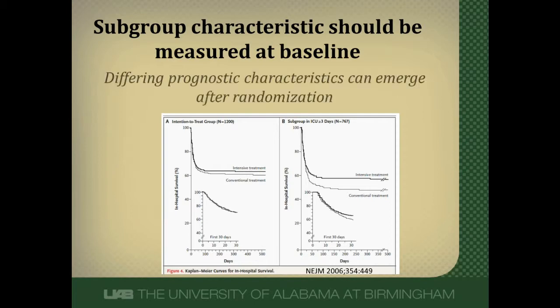The main reason is that prognostic characteristics can and usually do emerge as patients receive interventions and are undergoing follow-up. This figure is from a study done in critically ill patients admitted to the ICU who were randomized to intensive insulin therapy or conventional therapy. A subgroup analysis was undertaken to compare outcomes between those who stayed in the ICU for greater than three days and those who stayed for less than three days. The length of ICU stay would not have been known prior to randomization — there would be no way of telling how long the patient was going to need to be in the ICU. So this was a characteristic that developed after the study was ongoing.